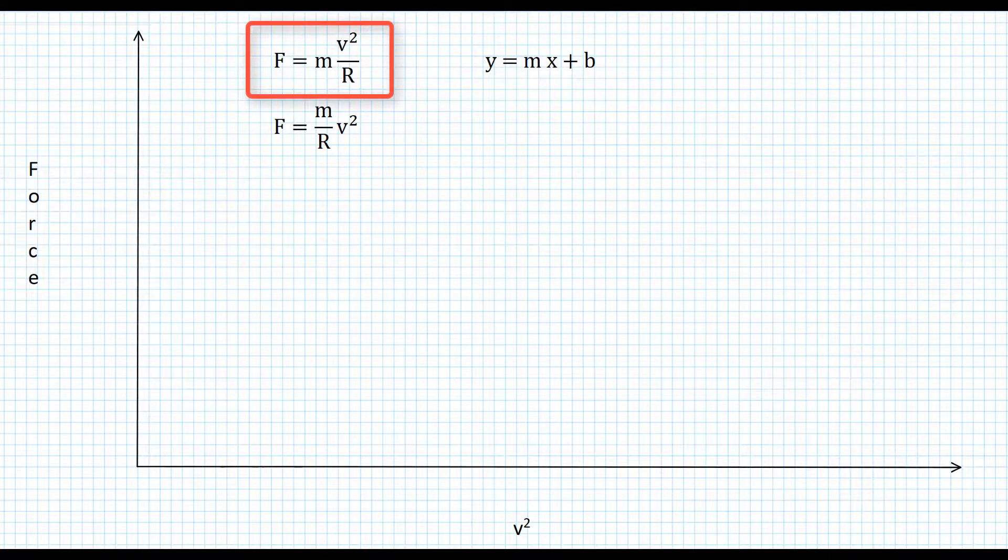Well, we've been using this equation, F equals mv squared over r. The centripetal force needed to keep something moving in a circular path is equal to its mass times the square of the speed divided by the radius.